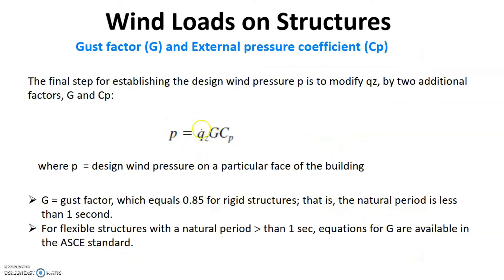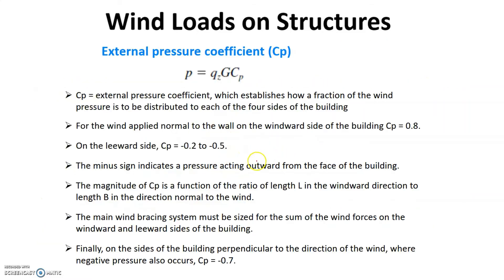Once these values are done, we get the value of Qz. Now there are two other factors that we need to calculate: G, which is the gust factor, which is 0.85 for rigid structures, and Cp, the external pressure coefficient.